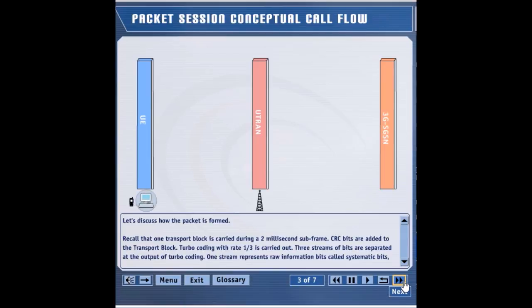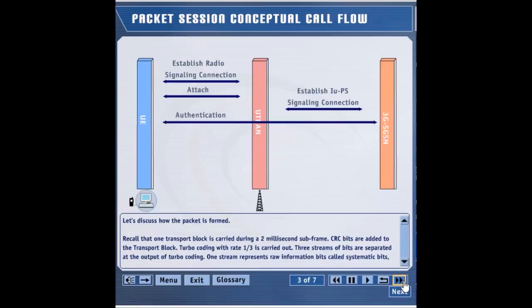The first step is the establishment of a signaling connection between the UE and UTRAN. This is an RRC connection, and it helps UE to exchange messages with the UTRAN. The attach procedure is carried out so that the 3GSGSN knows which RNC is responsible for the given UE. An IUPS signaling connection between the RNC and 3GSGSN helps them exchange messages. The UE is authenticated by the 3GSGSN with the help of the HLR authentication center. The RNC and Node-B just transfer the messages without inspecting the message contents.